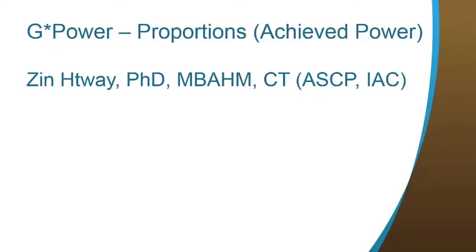Welcome to Stats Chat. My name is Dr. Xin Tui, and in this session I will show you how to use G-Power software to calculate achieved power between two independent proportions, hence two independent groups. For the following examples, we will set the minimum threshold value of power equal to 0.80 and the maximum threshold value of alpha equal to 0.05.